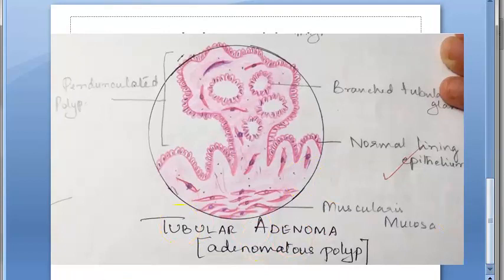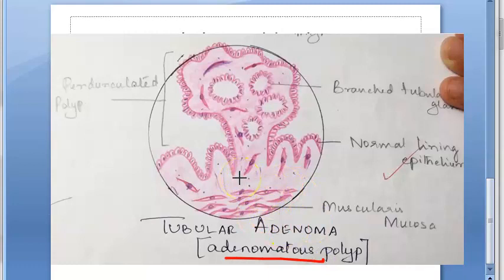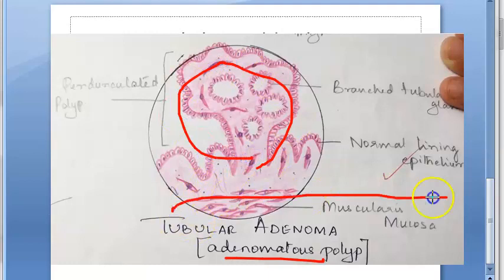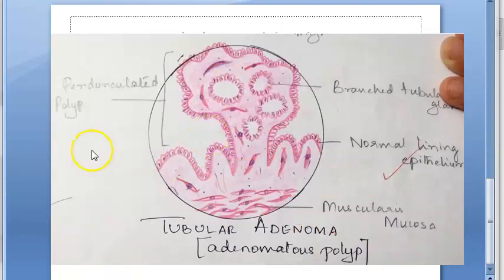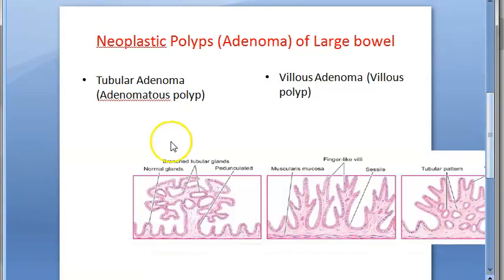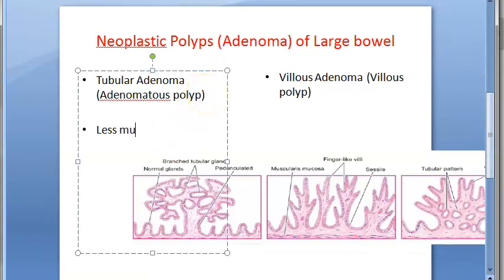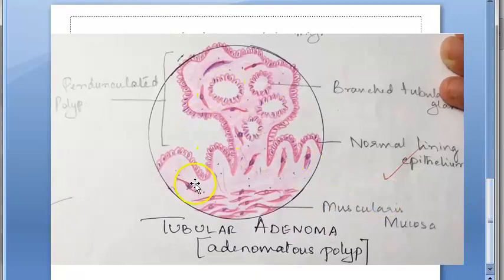Microscopically in tubular adenoma, the appearance is that of a benign tumor. The polyp overlies the muscularis mucosa and is composed of branching tubules. There is less mucus secretion in tubular adenoma. The cells show large nuclei and increased mitotic activity, typical neoplastic features.